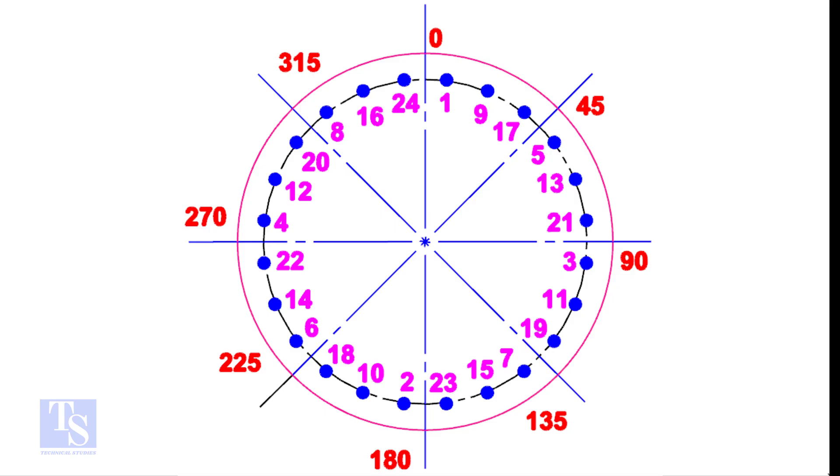For larger flanges, divide the bolts into eight equal groups. Apply the same method. The difference between the two nearest holes will be 8.